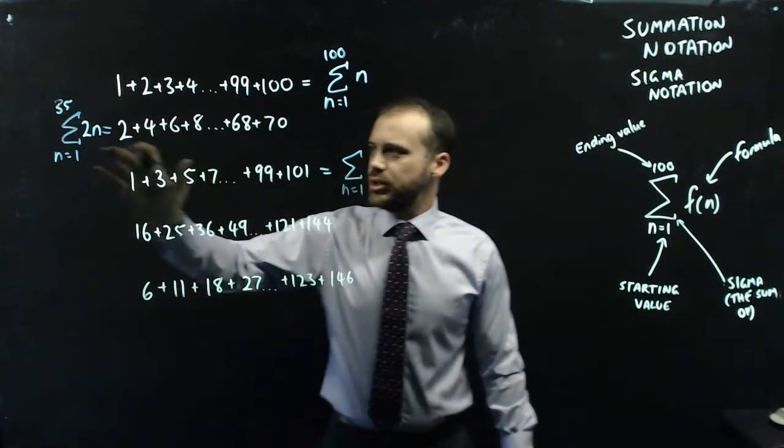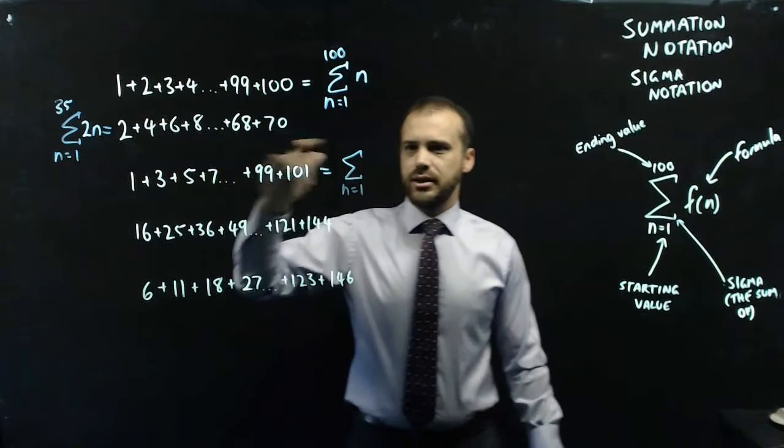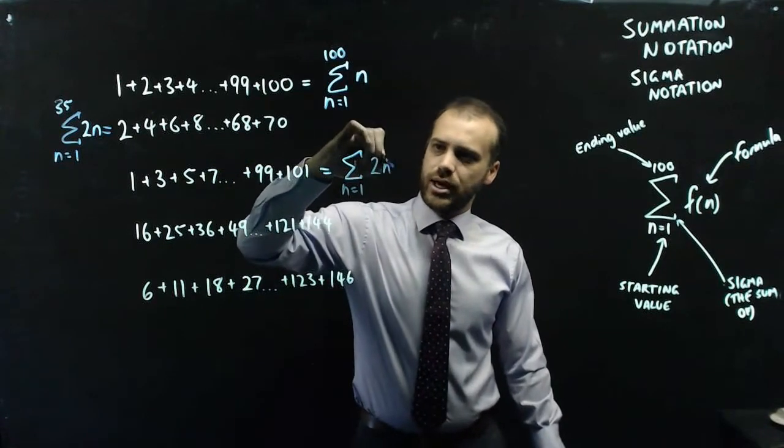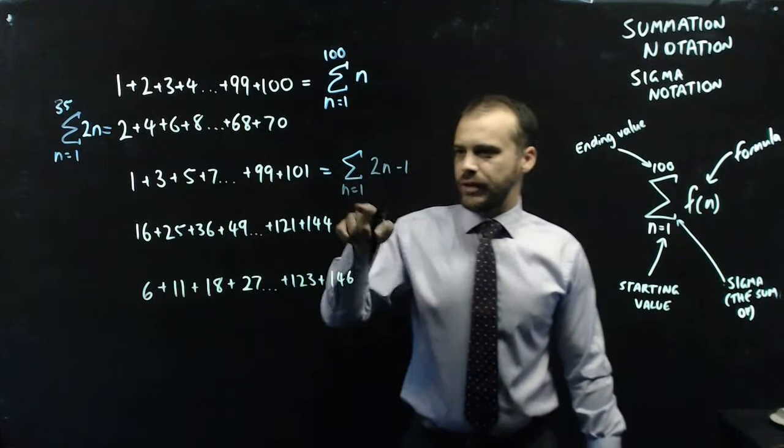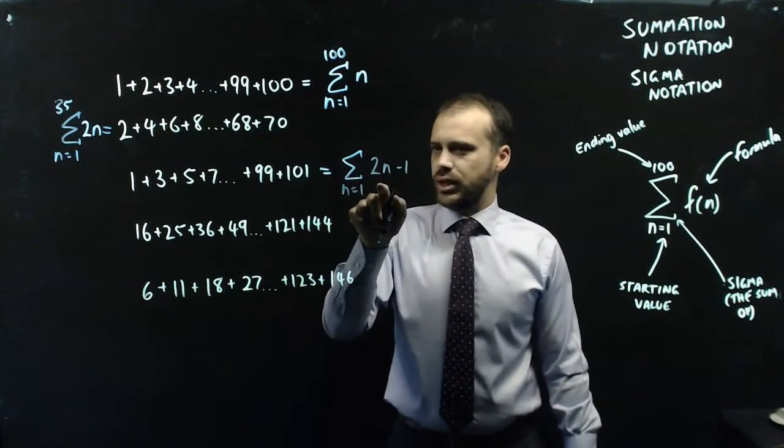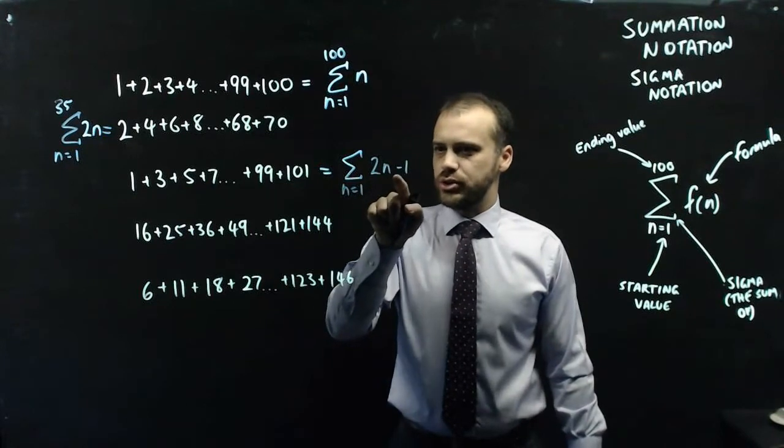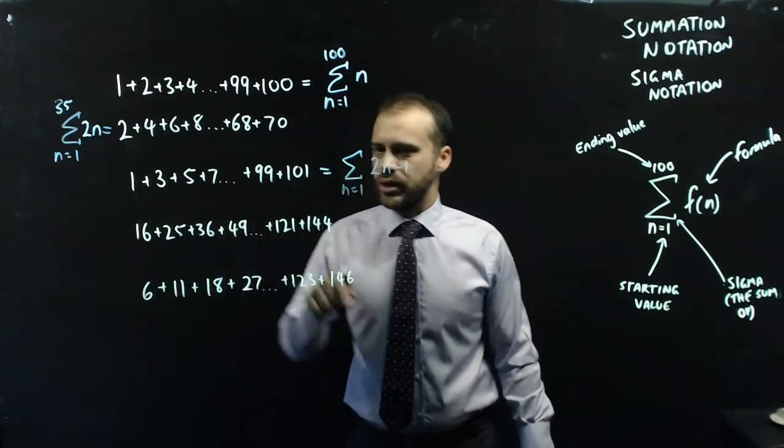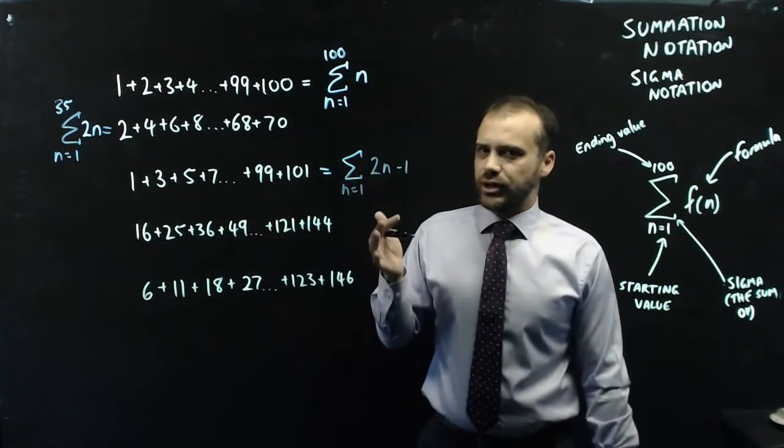Well, it's kind of like this formula here, except we write 2n minus 1. If I put n equals 1 into 2n minus 1, I'll get 2 times 1, which is 2, minus 1, which is 1.